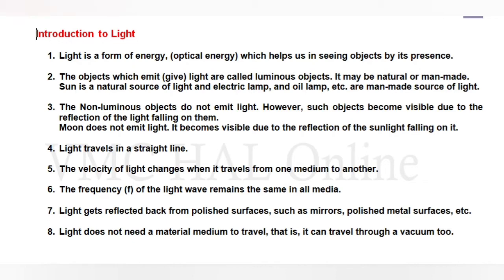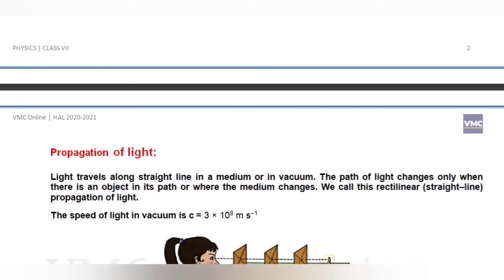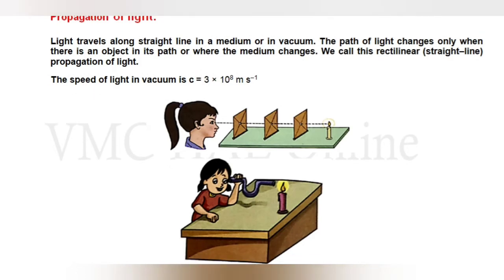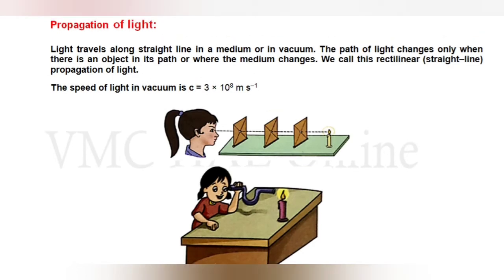Light does not need a material medium to travel — that is, it can travel through a vacuum too. Light ko travel karne ke liye medium ki requirement nahi hai. Light travels along a straight line in a medium or in vacuum — kisi bhi medium mein ya vacuum mein agar light propagate kar rahi hai, toh ek straight line mein propagate karegi.